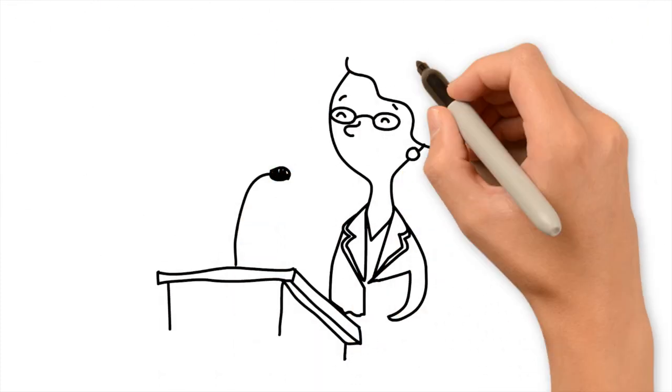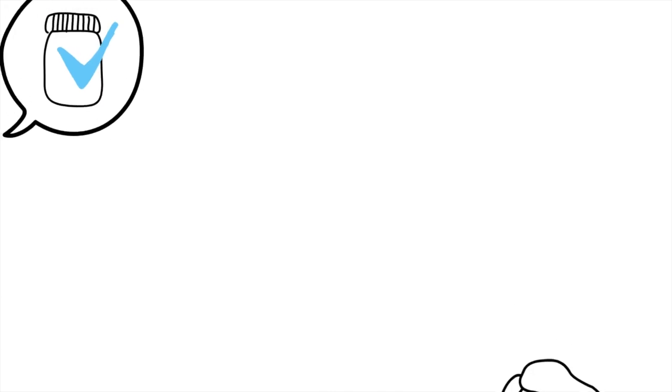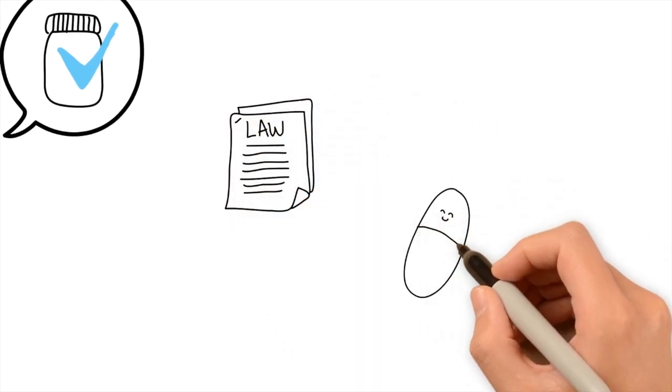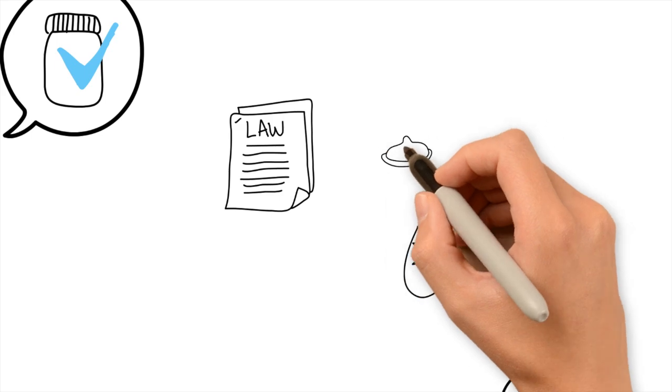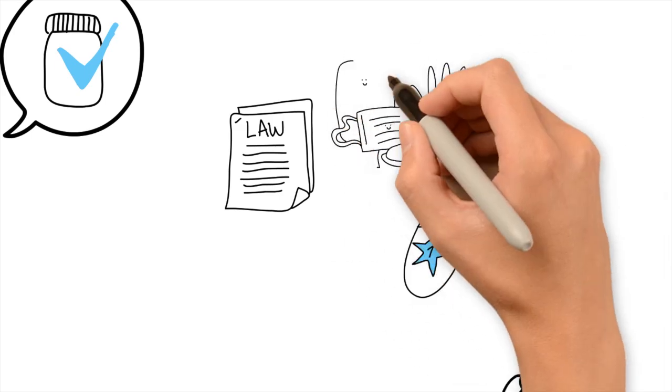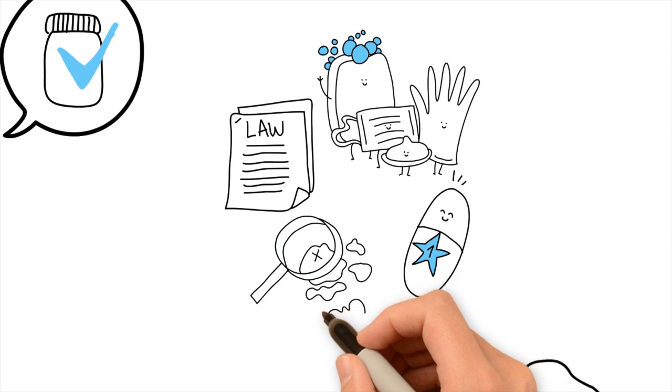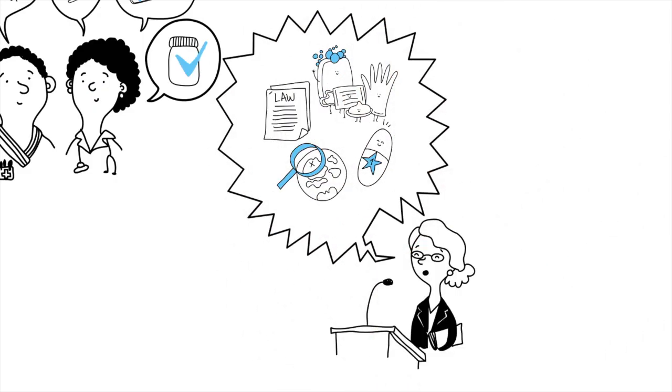Governments also play an important role by regulating the production, distribution and sale of antimicrobials and quality assuring them, by implementing hygiene and sanitation standards, by establishing monitoring and surveillance systems, and by raising awareness.